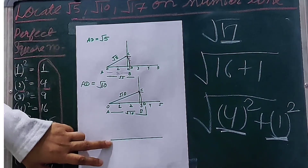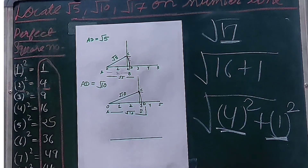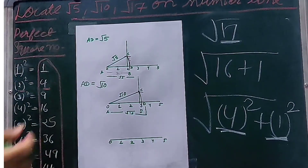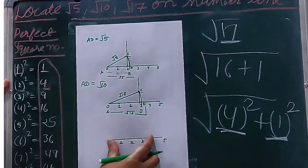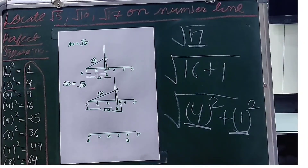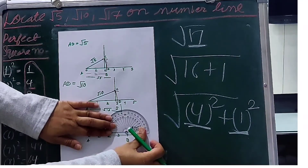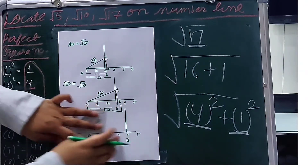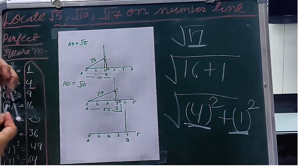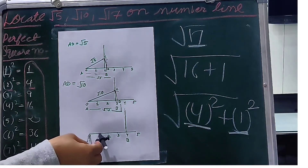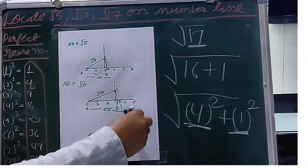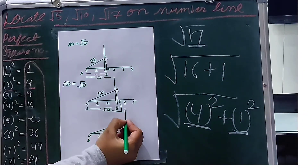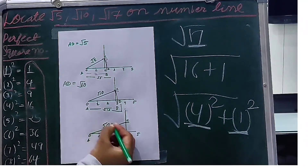Similar procedure: make a line and mark some points at equal distance. Mark 0, 1, 2, 3, 4, and 5. For root 17, AB is equal to 4 units. Make a perpendicular on point B. As our second number is 1, measure 1 unit from here and make a cut on this line at point C. Join point A and point C. This line AC is our root 17.